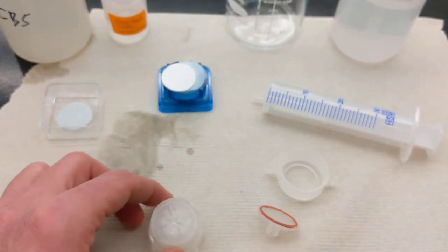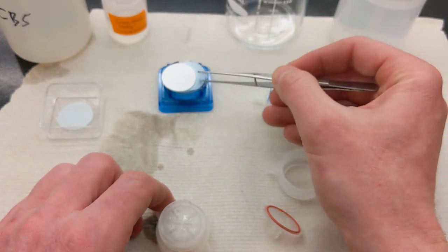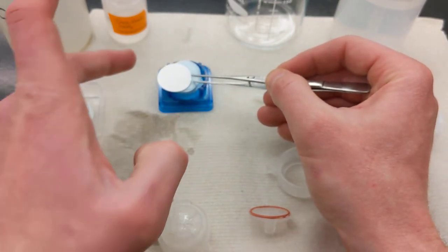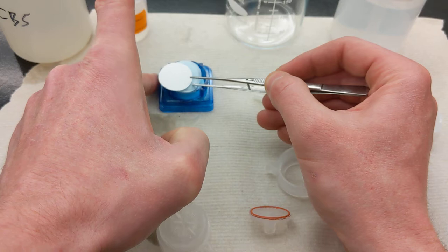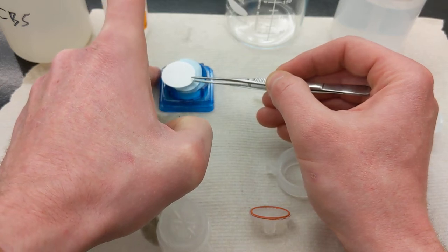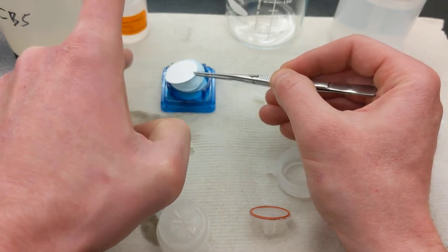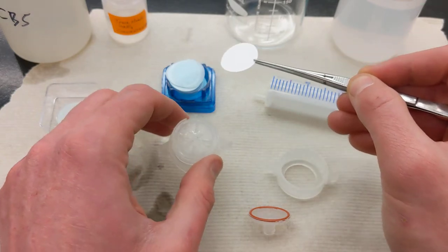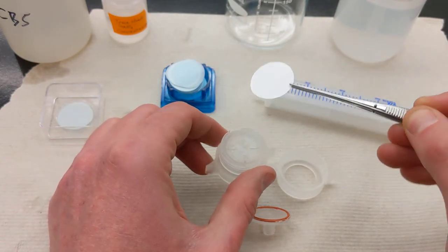So what we're going to do is use a pair of forceps, and you're going to grab a 0.45 micron filter. You can do this with gloves, or you can do this with your hands. Just be sure not to touch the filter with your fingers, or anything dirty for that matter.